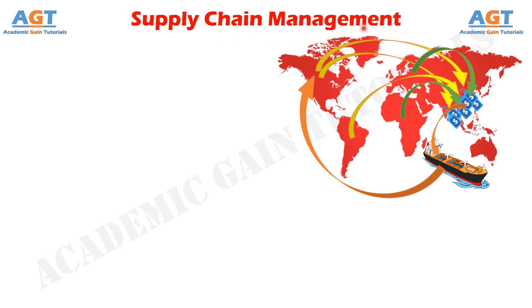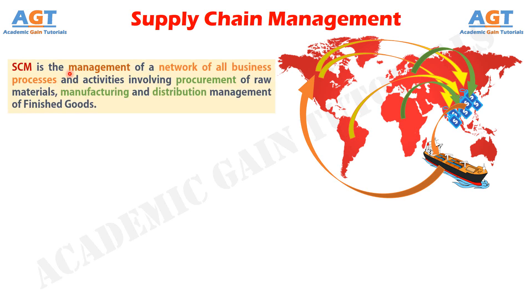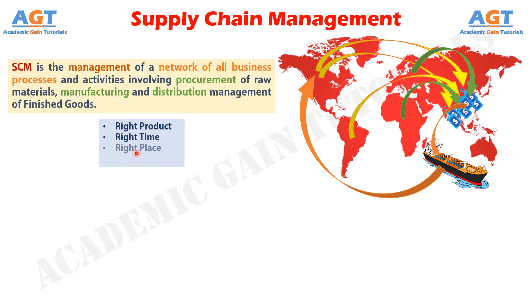As per definition, supply chain management is the management of a network of all business processes and activities involving procurement of raw materials, manufacturing and distribution management of finished goods. Supply chain management is also called the art of management of providing the right product, at the right time, right place and at the right cost to the customer.